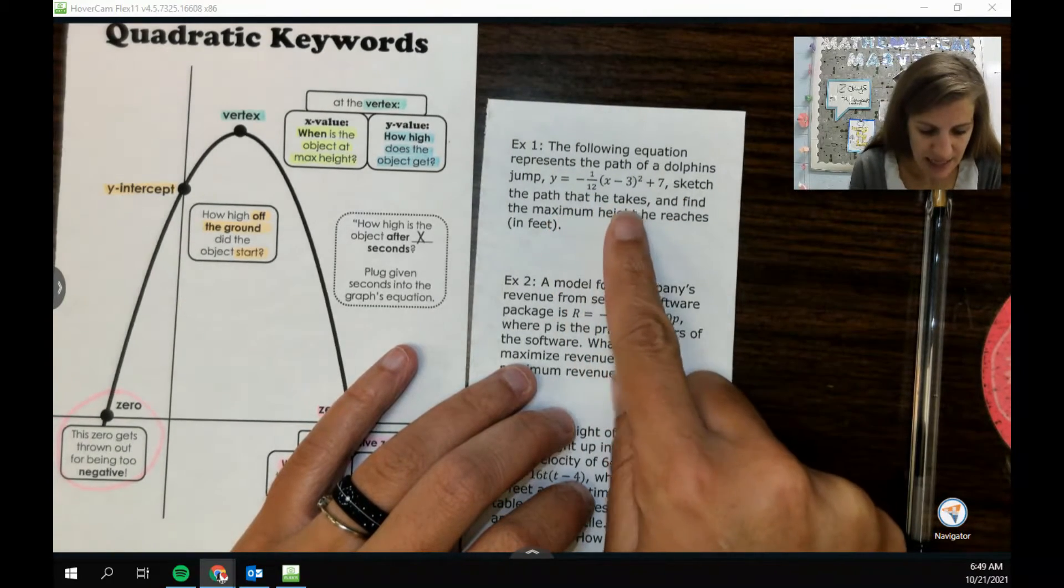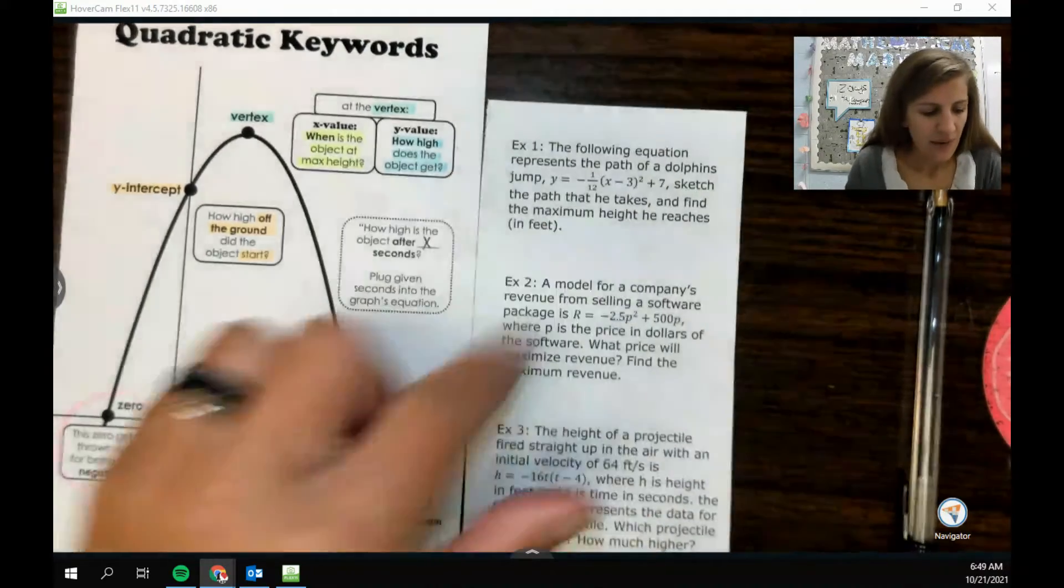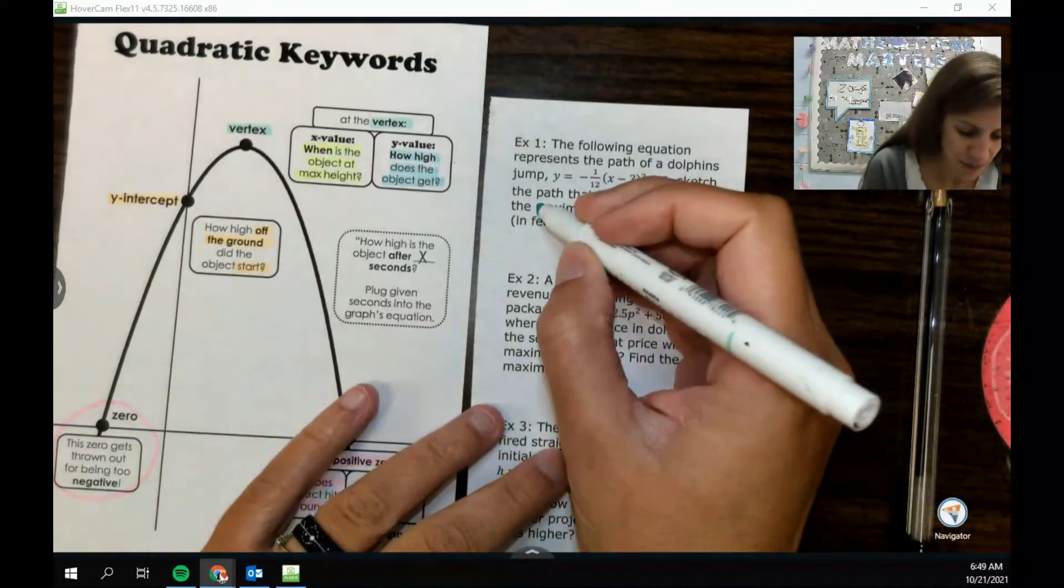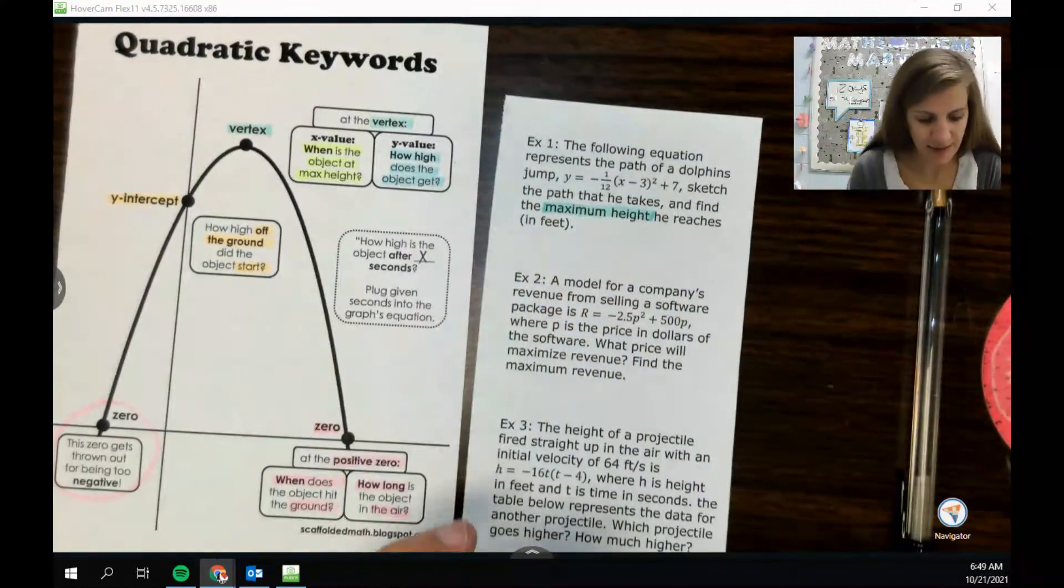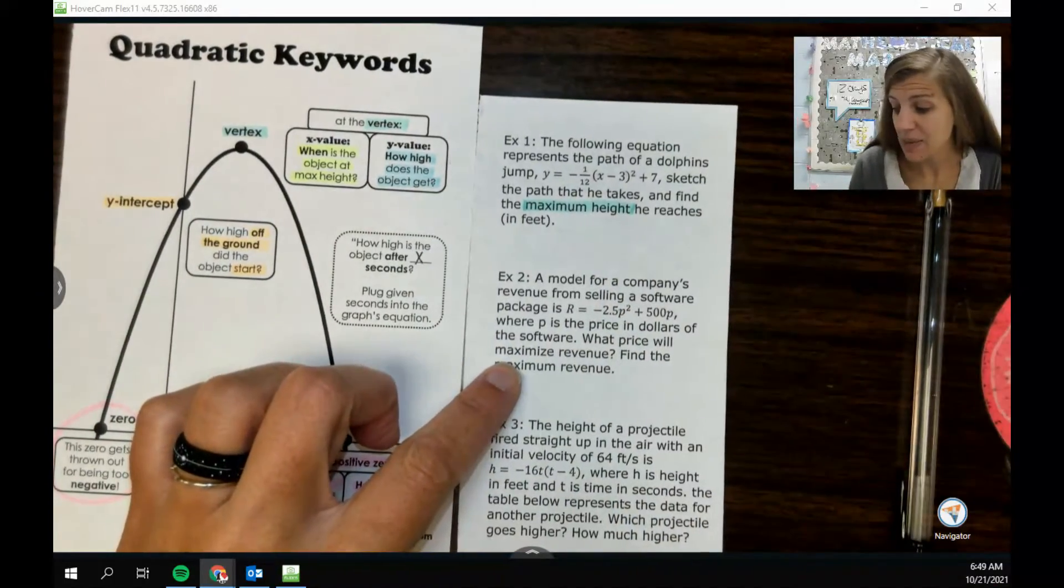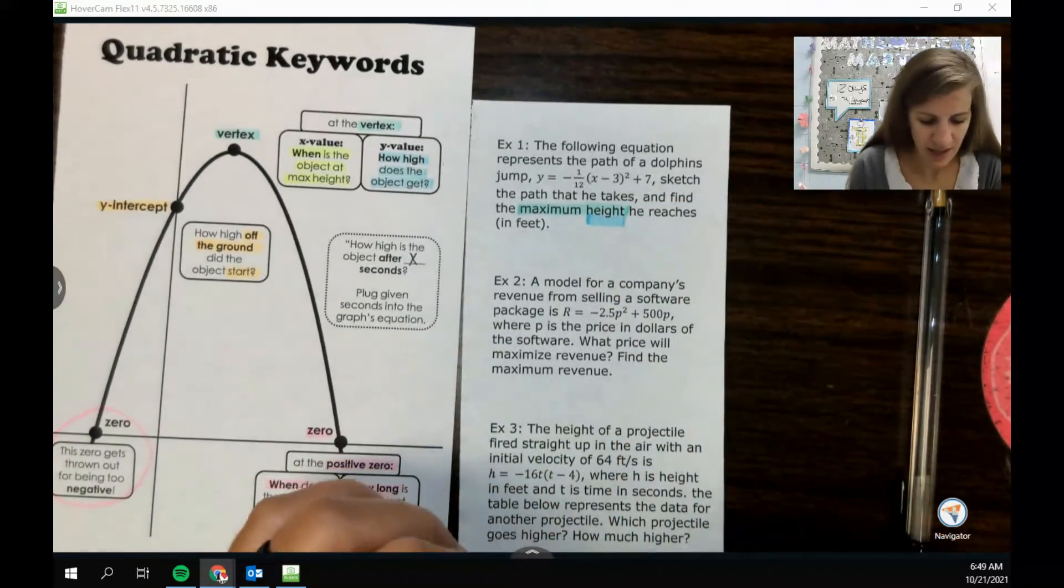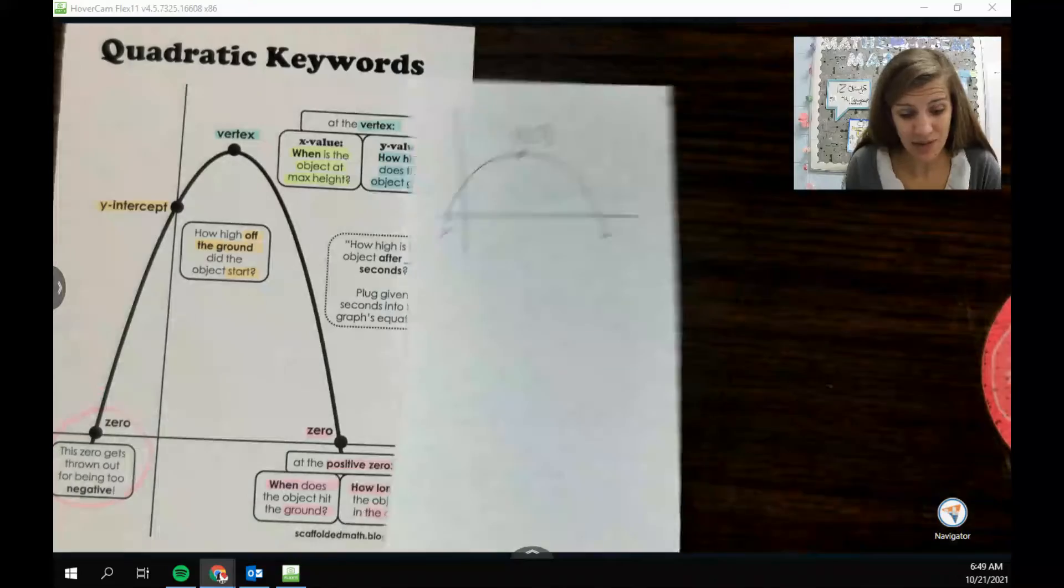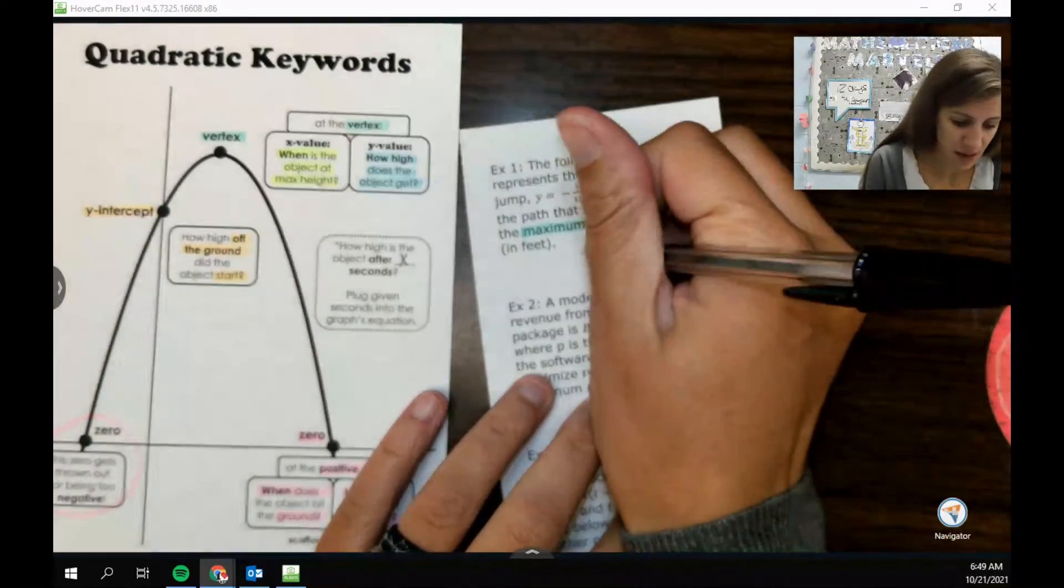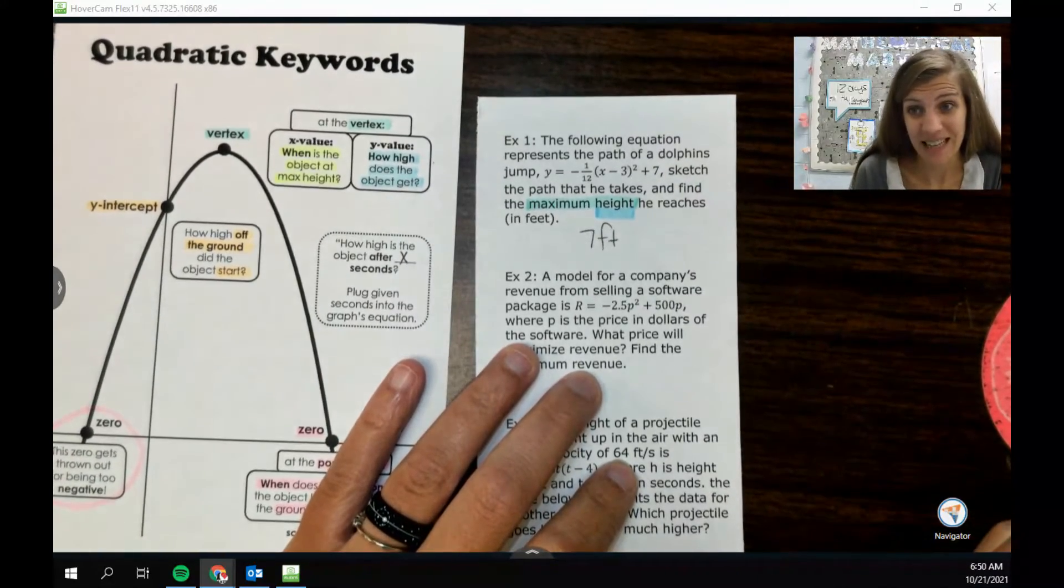So they want me to figure out, what do they want me to figure out here? Sketch the path that he takes and find the maximum height that he reaches. So I want the maximum height, that is the vertex. That's like low key a vertex thing and we want how high. So that is specifically the y value of the vertex, which I mean don't need to do any math for that. The y value of the vertex is right there at seven, so this is just seven feet. No math necessary, that's kind of it.